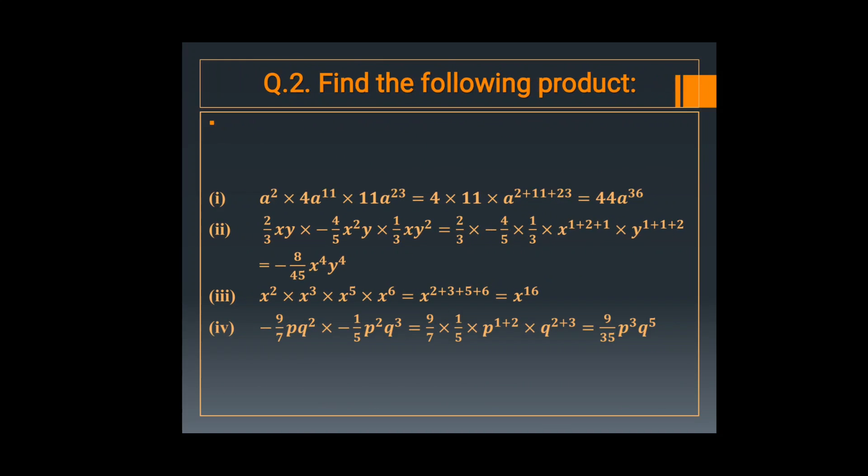Now move on to question number 2: find the following products. In the first part, A square multiplied by 4A raised to the power 11, multiplied by 11A raised to the power 23. Here, multiply first 4 into 11 to get 44, then add the powers of the same base A: 2 plus 11 plus 23 equals 36. So it is 44A raised to the power 36.